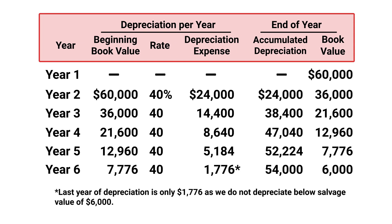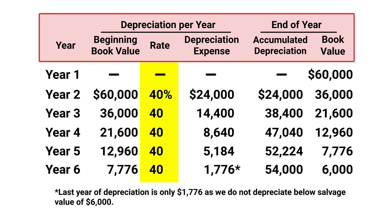Let's take a look at how we compute depreciation for the rest of the asset's useful life. For each year, we take the beginning of period book value multiplied by the Double Declining Depreciation Rate to get depreciation expense per year.